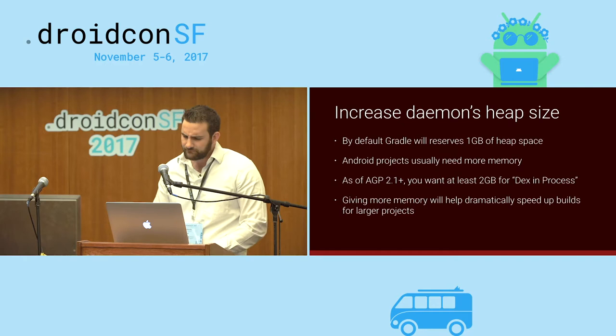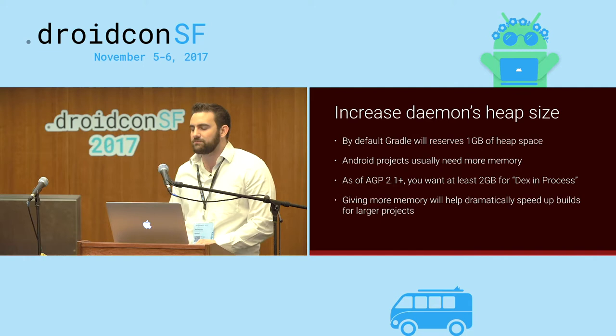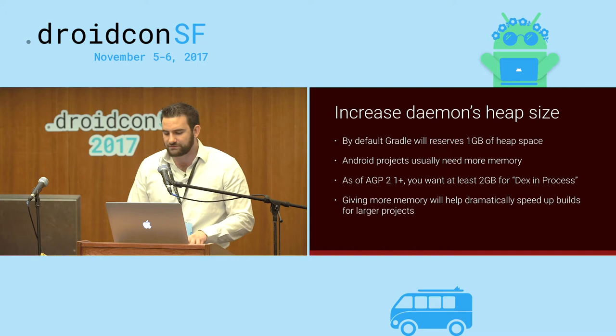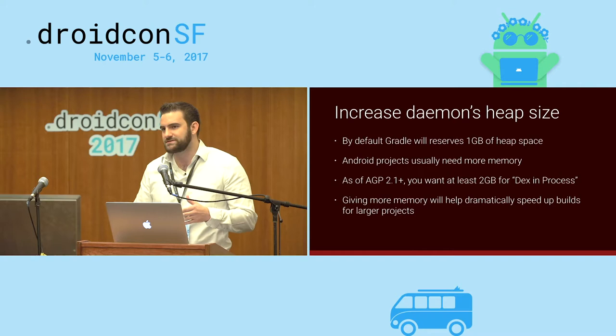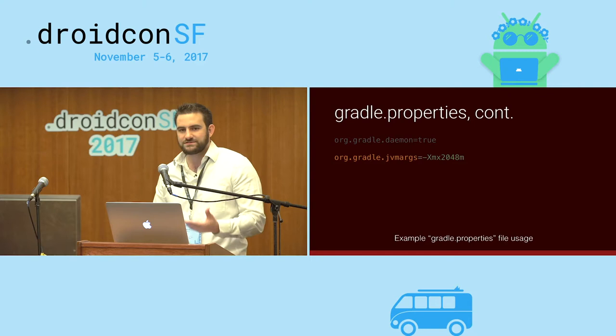As of Android Gradle plugin 3.1, specifying at least two or more gigabytes allows you to use something called Dex In Process, which dramatically speeds up builds. I really encourage you to play around with your JVM args. For a multi-dex project with several different modules — Java libraries, Android libraries, and the app itself — giving more memory dramatically helps increase the dex compilation. At minimum for Android projects, I'd suggest at least two gigs.